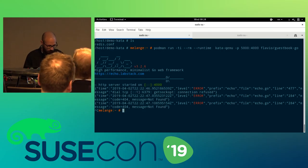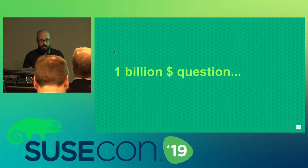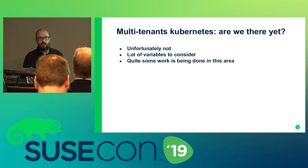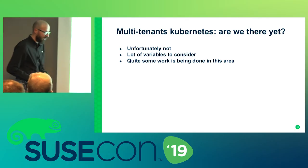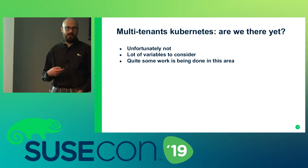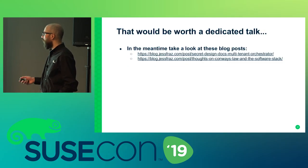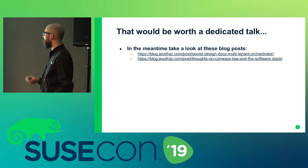Finally, the billion-dollar question: can Kata solve Kubernetes multi-tenancy? The short answer is no — not yet. Running multiple tenants on the same Kubernetes cluster is a very complex topic that needs its own dedicated talk. Kata is moving in the right direction but there is still a lot of work to do. Two blog posts by Jesse Frazelle describe this problem in detail for anyone curious about the topic.